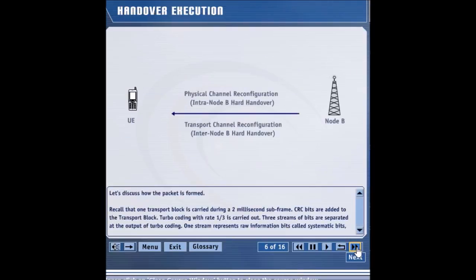After the RAN receives the measurement report that shows a new stronger cell, the RAN sends a message to instruct the UE to stop the HSDPA operation in the current cell and to start the HSDPA operation in the new cell. If the stronger cell belongs to the same node B, an intra-node B handover occurs, and the RAN can use a physical channel reconfiguration message to execute the handover.